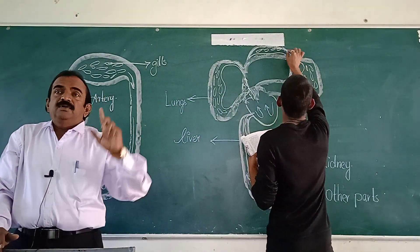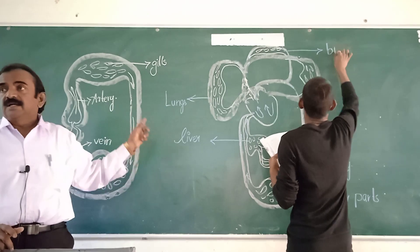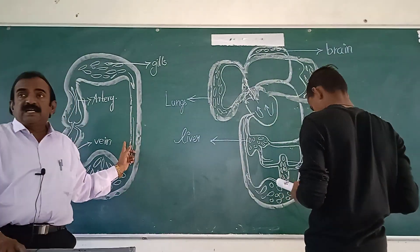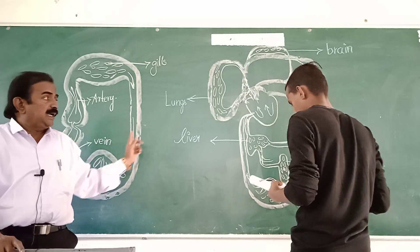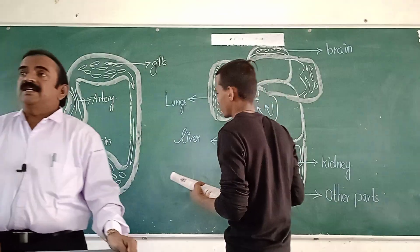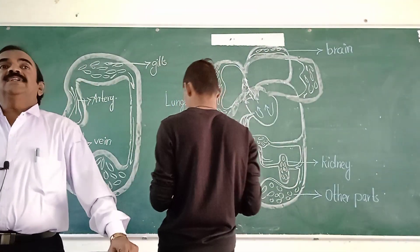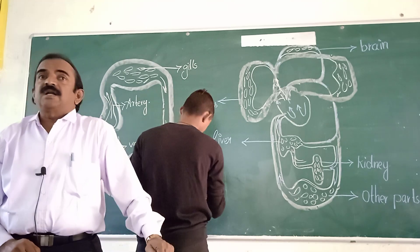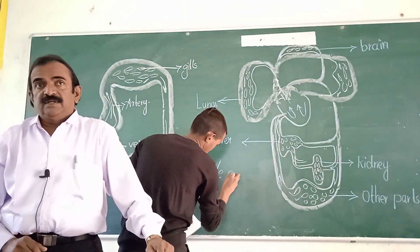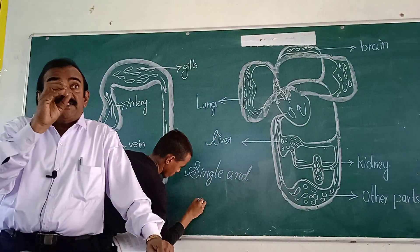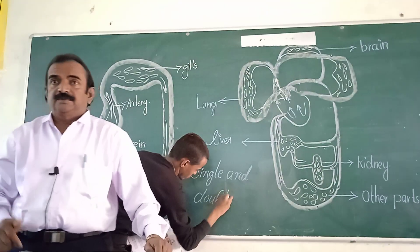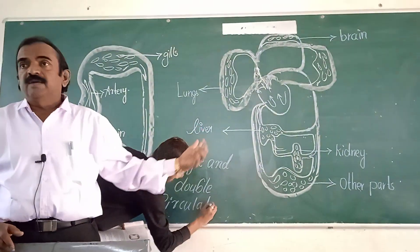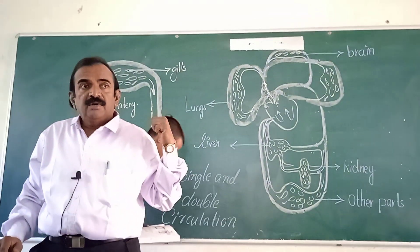Hello. Hi sir. All of you look at the green board. Here Narayan is drawing single circuit circulation diagram and double circuit circulation diagram. This is from Unit 3 Transportation, page number 59. See these diagrams are there in your textbook. You open your textbook and also see here — diagrams are on the green board. Narayan is drawing that diagram.